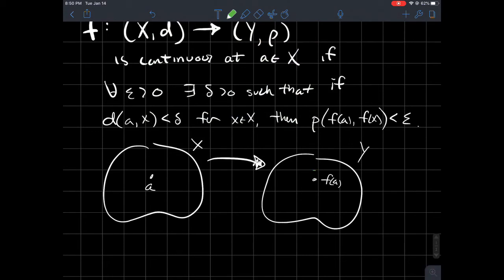If you were given any number epsilon, and you make an open ball around f(a) of radius epsilon, if this function f is continuous, then that means you should be able to go back to the domain, back to X here.